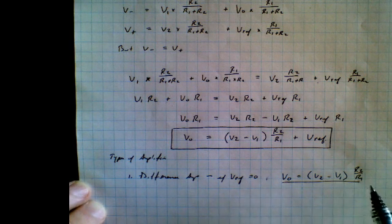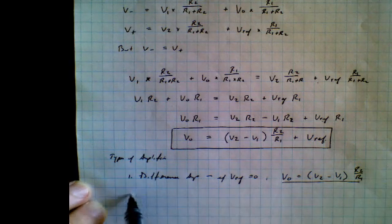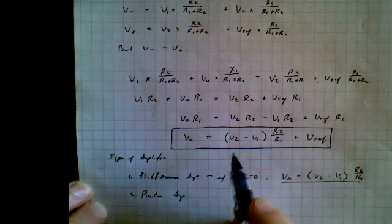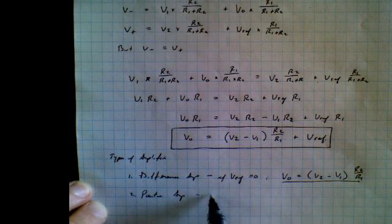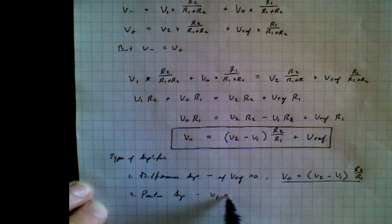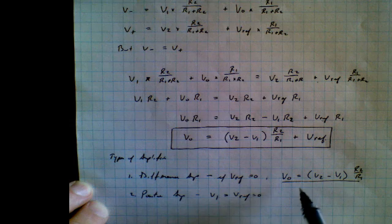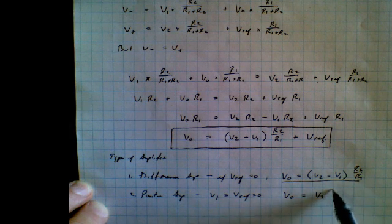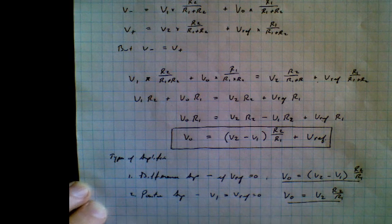Now, let's say that we wanted to get a positive amplifier. And to do that, we would simply say let V1 equal Vref equals 0. So what do we get then? We get V0 equals V2 times R2 over R1. It's a positive amplifier.